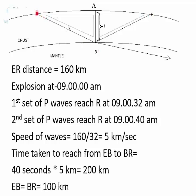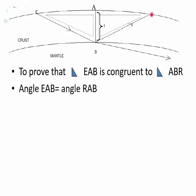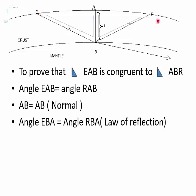By the laws of reflection, E-B will equal 100 km. Now we have two right angle triangles: E-A-B and R-A-B. We can prove that triangle E-A-B is congruent to triangle R-A-B, since angle E-A-B equals angle R-A-B, side A-B is common to both, and angle E-B-A equals angle R-B-A, which can be proved using the law of reflection. Therefore, by angle-side-angle, triangle E-A-B is congruent to triangle R-A-B.